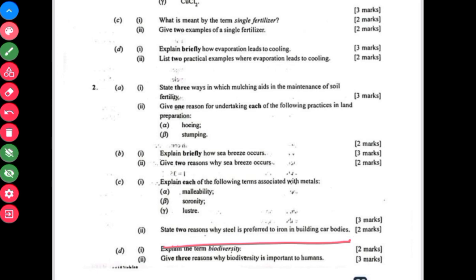Question 2c(ii): state two reasons why steel is preferred to iron in building car bodies. Then question 2d is looking at biodiversity and reasons why biodiversity is important to humans. This topic is in living and non-living things. You find it in your textbook.